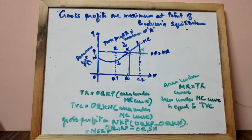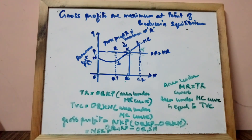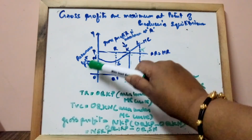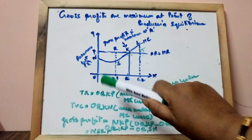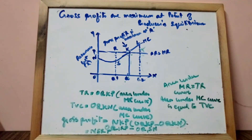What we have understood is: the area under the MR curve is equal to TR, and the area under the MC curve is equal to TVC. Accordingly, you find TR and TVC, then find the difference between TR and TVC. That area represents gross profit.